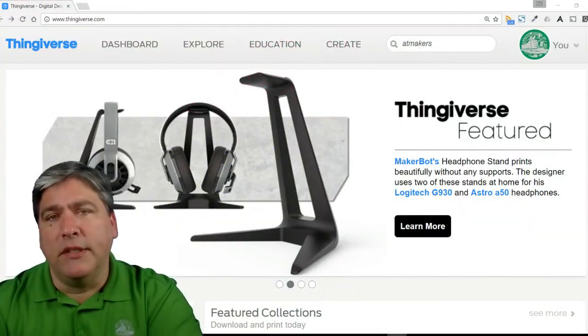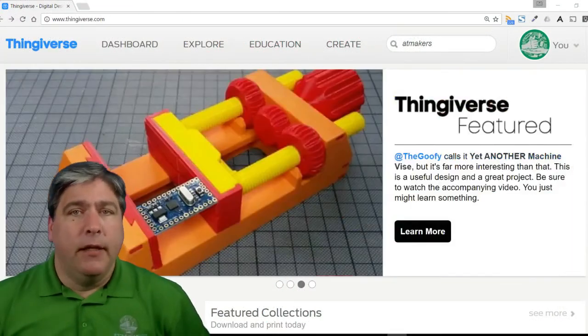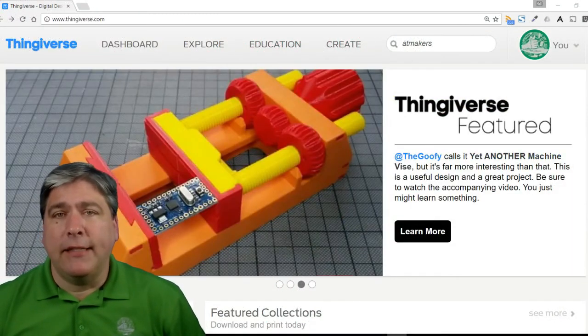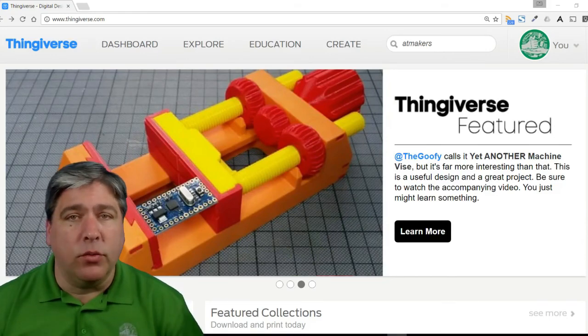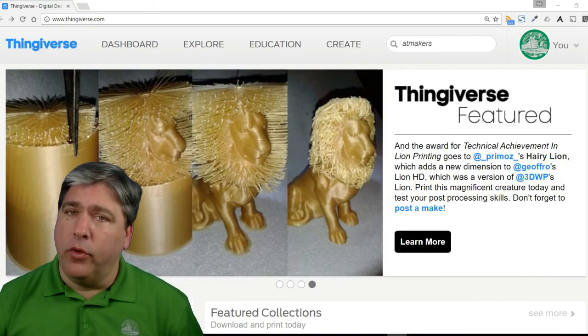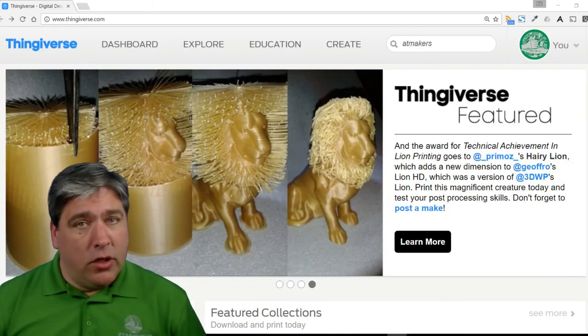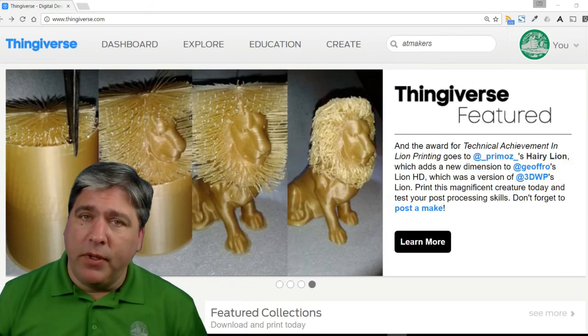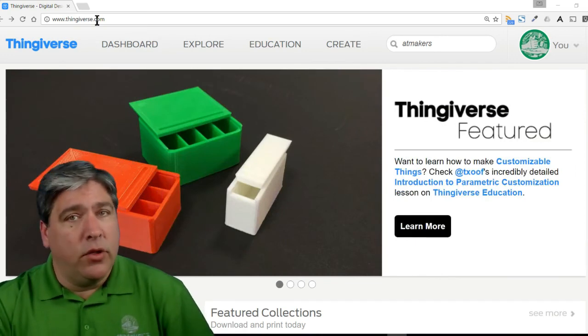The first thing you'll need to do is download the files to print. Now 3D printing files are called STLs and they're kind of like PDF files where if you download them and bring them to somebody with a 3D printer, they can print them for you. To download ours, you'll want to go to Thingiverse. That's a standard place to find 3D files and that's where you'll find ours.